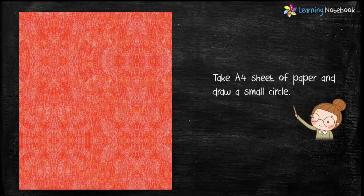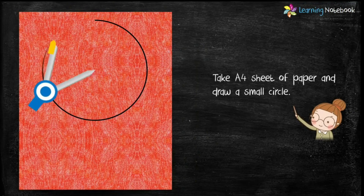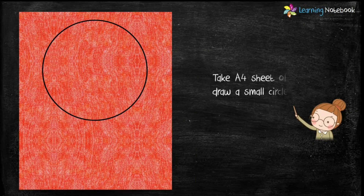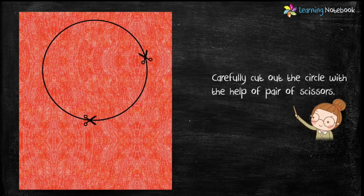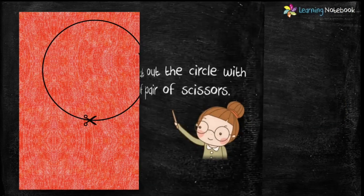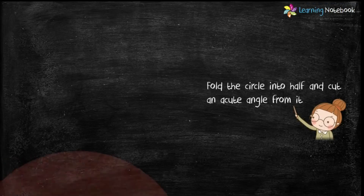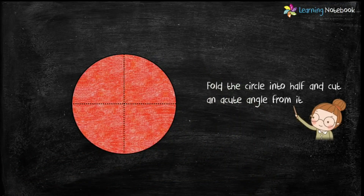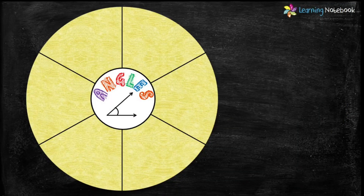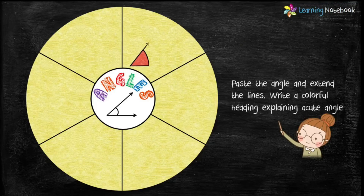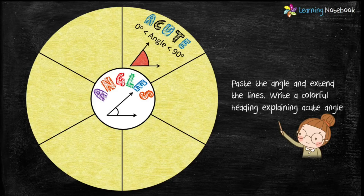Next, take a colorful A4 sheet and draw a small circle, then carefully cut it out using scissors. Fold this circle in half vertically as well as horizontally, then cut an acute angle from it as shown. Paste this angle on the math wheel and extend the lines. Write a colorful heading explaining its property that acute angle is greater than 0 degrees but less than 90 degrees.